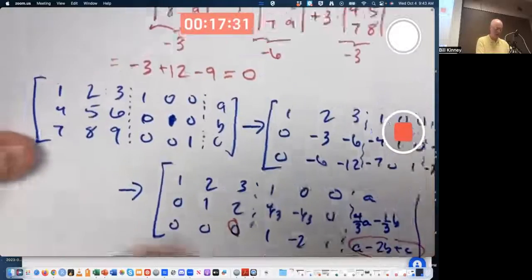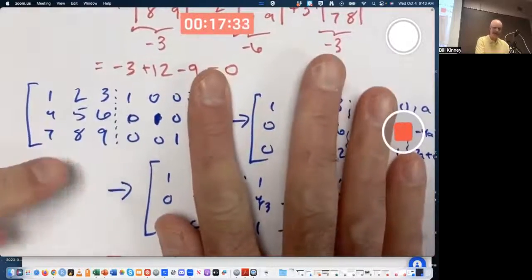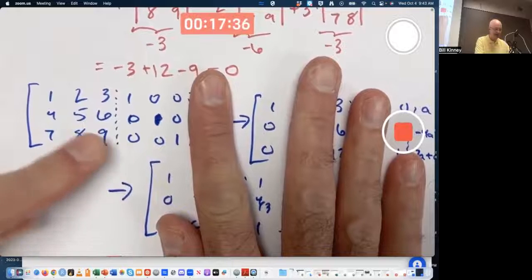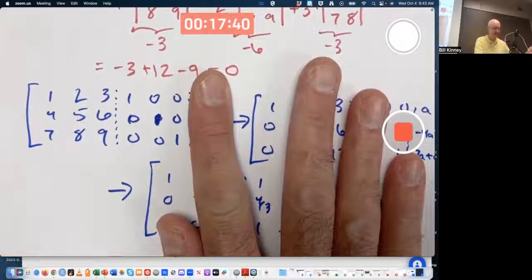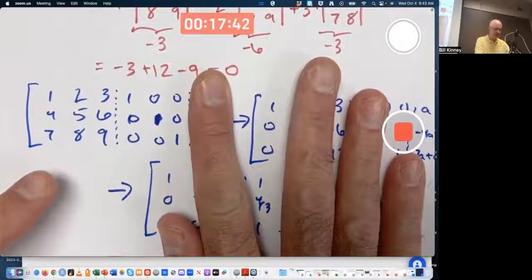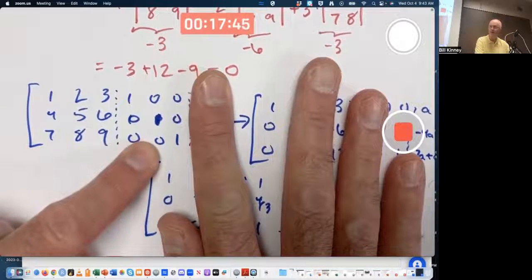But this is the algorithm. That is the algorithm for finding an inverse when it exists. Take your original matrix and the identity matrix, do your row operations to reduced row echelon form. If this becomes the identity matrix, then whatever is over there is the inverse.